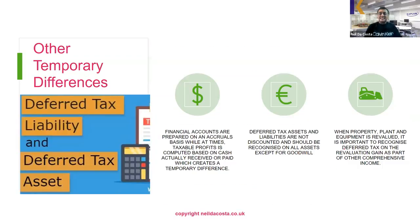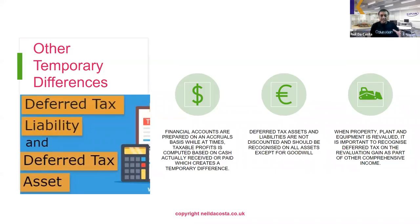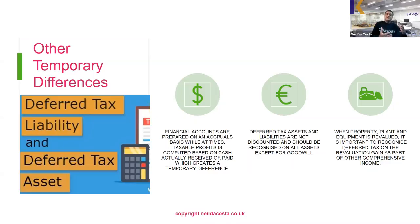Apart from the difference between depreciation and capital allowances, there are other temporary differences. When we prepare our financial accounts on an accruals basis it's based on invoices, while taxable profits are sometimes computed based on cash actually received or paid. This creates another temporary difference. We could end up with either a deferred tax asset or a deferred tax liability, and we don't discount these to present values — we simply recognize them on all assets except for goodwill.